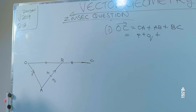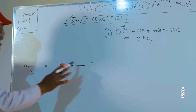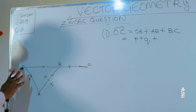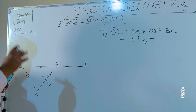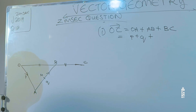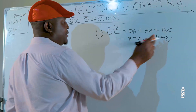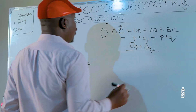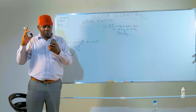Vector BC is equal to OB, which is P plus Q. So OC equals P plus Q plus P plus Q. Grouping like terms, this gives us 2P plus 2Q. So vector OC is equal to 2P plus 2Q.